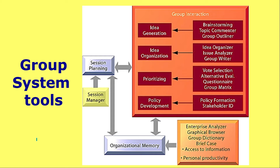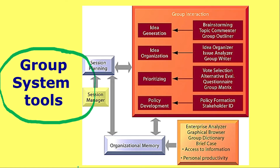Before looking at the software tools for GDSS, let's talk about group system tools in general. On the screen I have shared an image. In the group interaction block, number one is brainstorming — topic commenter and group outliner — where we generate various ideas from different group members. Within group interaction, idea organization is done using idea organizer, issue analyzer, and group writer, where we organize, analyze, and document the ideas to come up with the best one available.